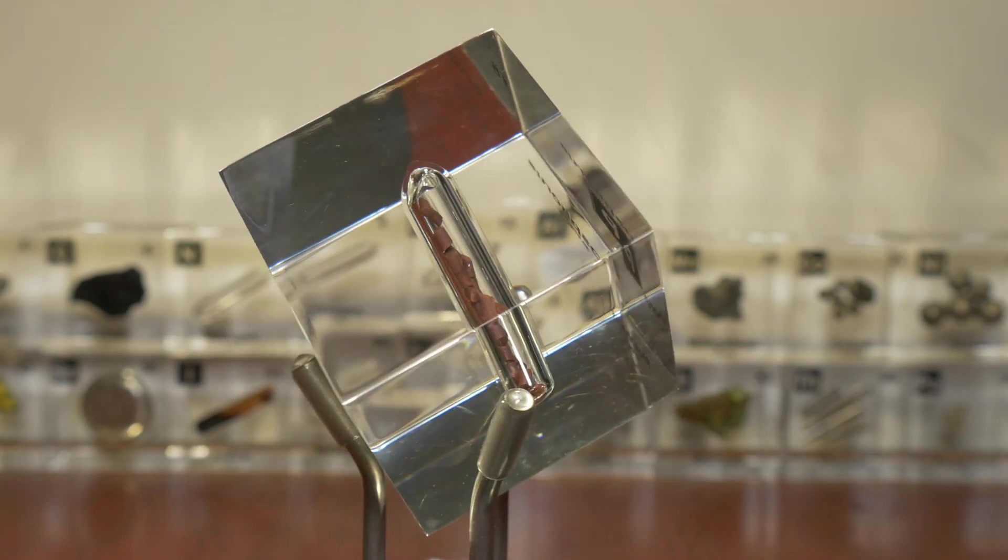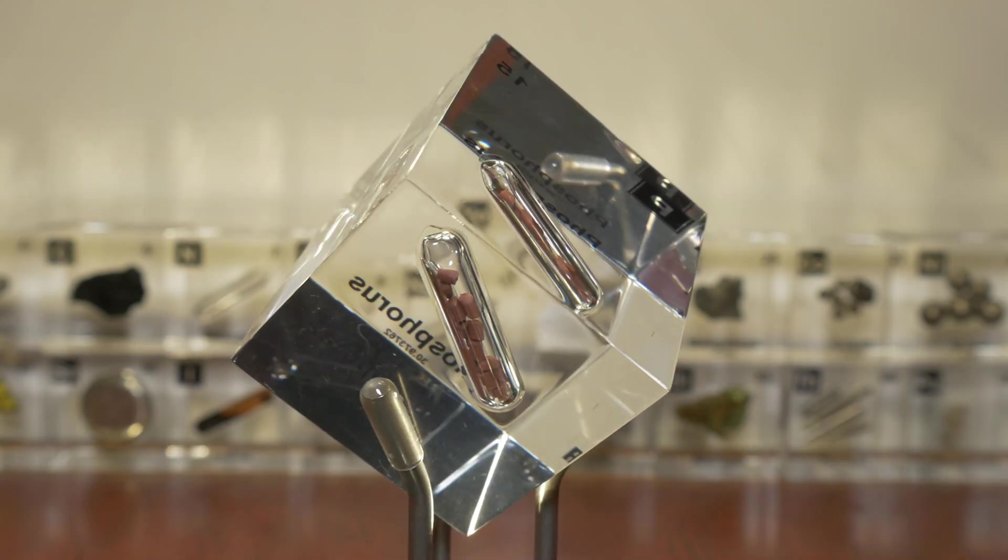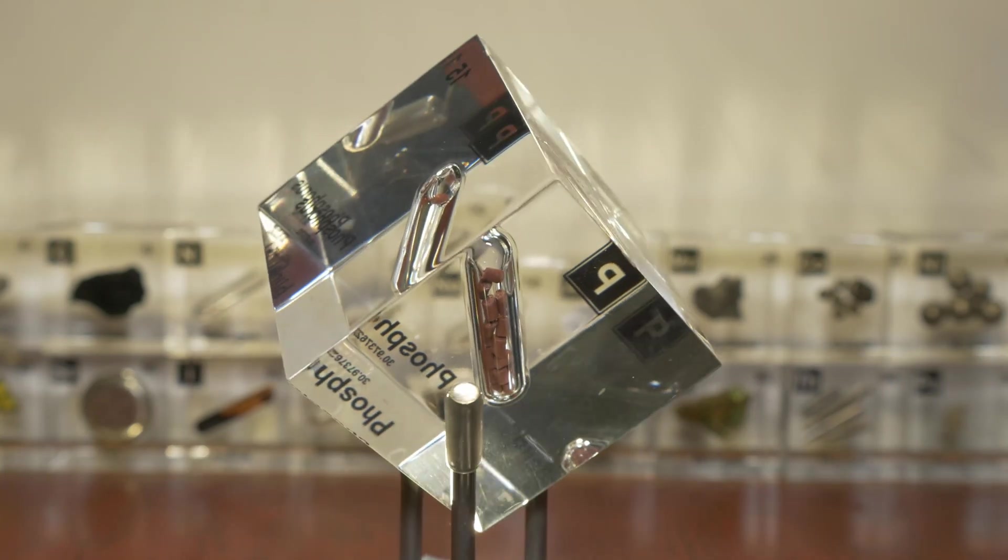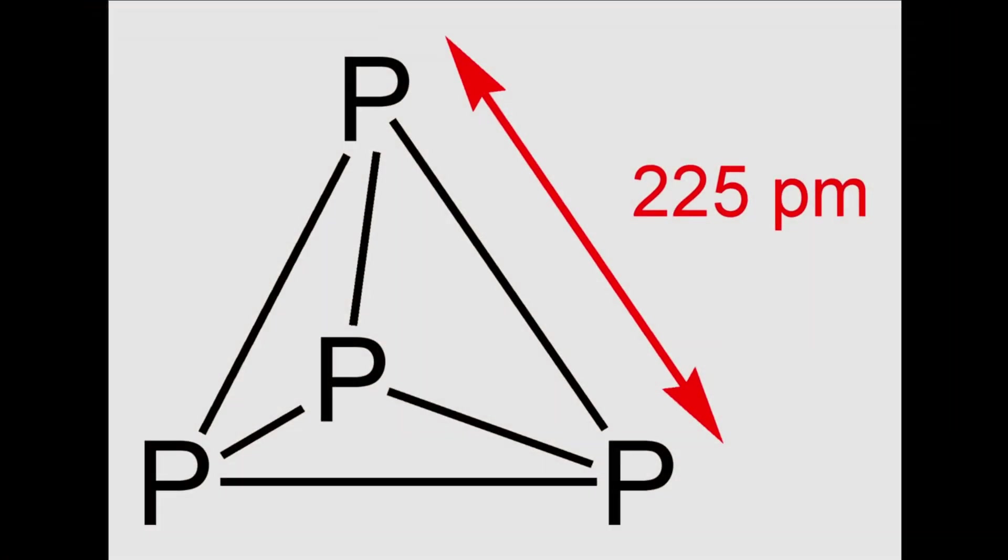Now, it is interesting to mention that phosphorus is an exception to the rule that gaseous elements consist of molecules made up of two atoms. The gas is P4 in the form of a tetrahedron.